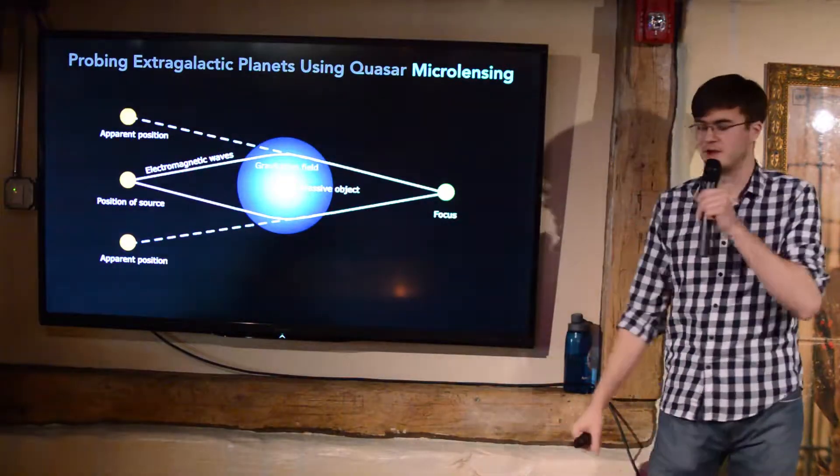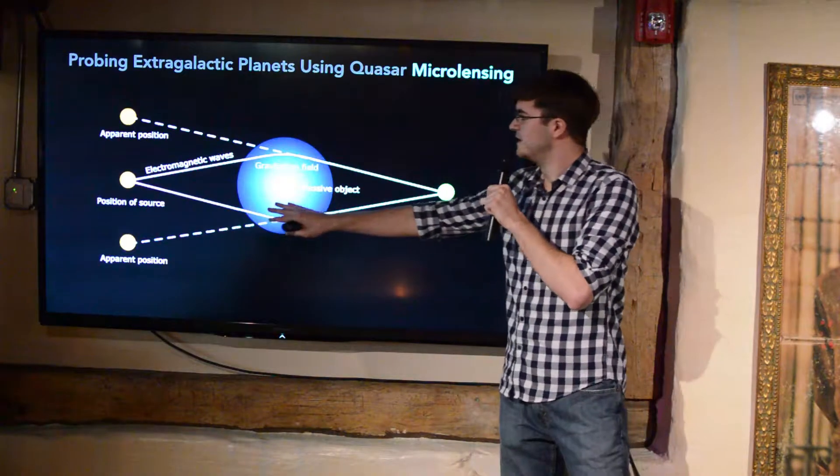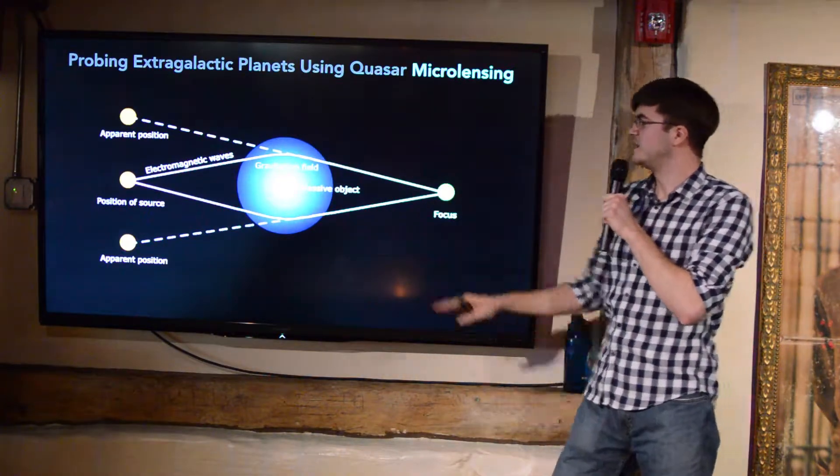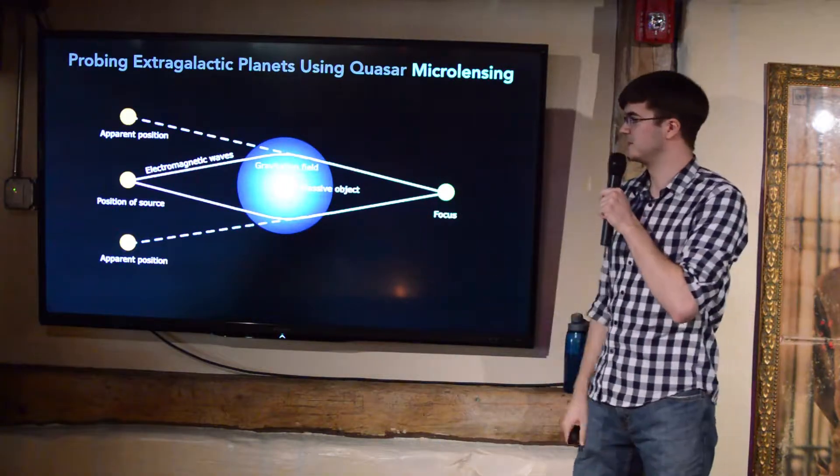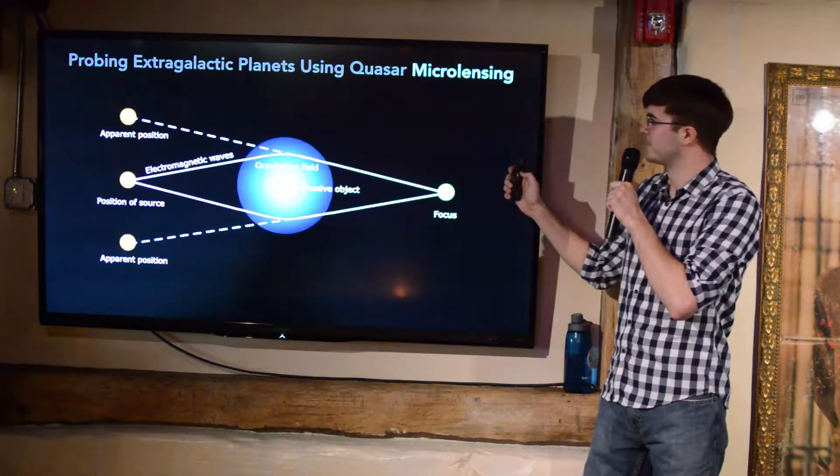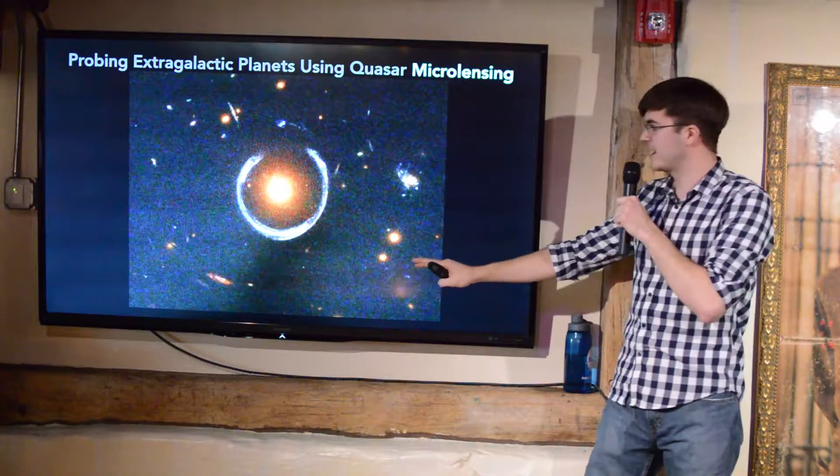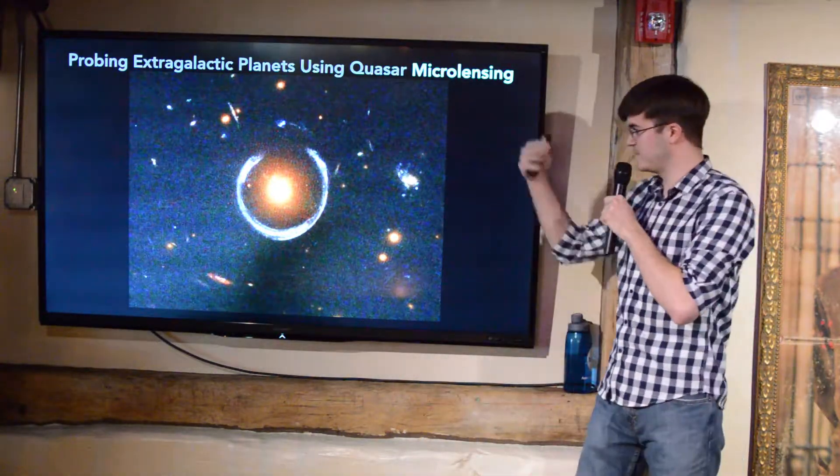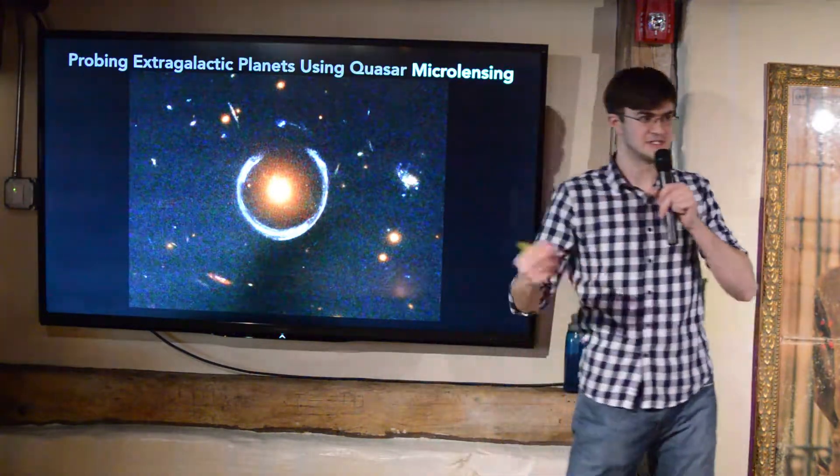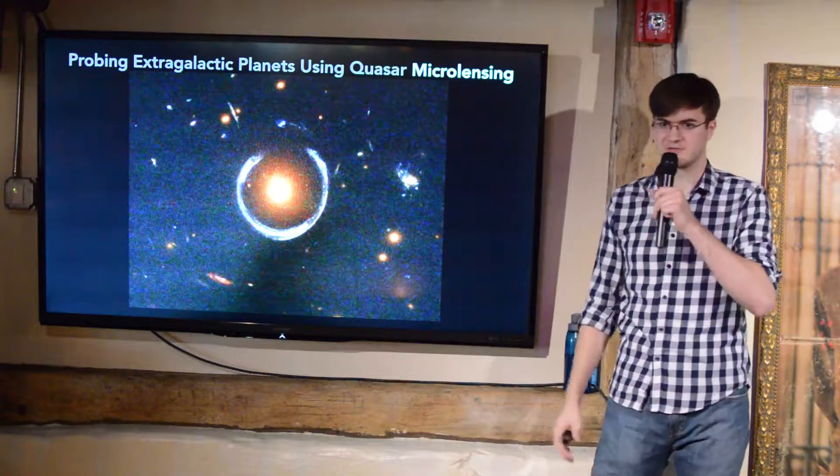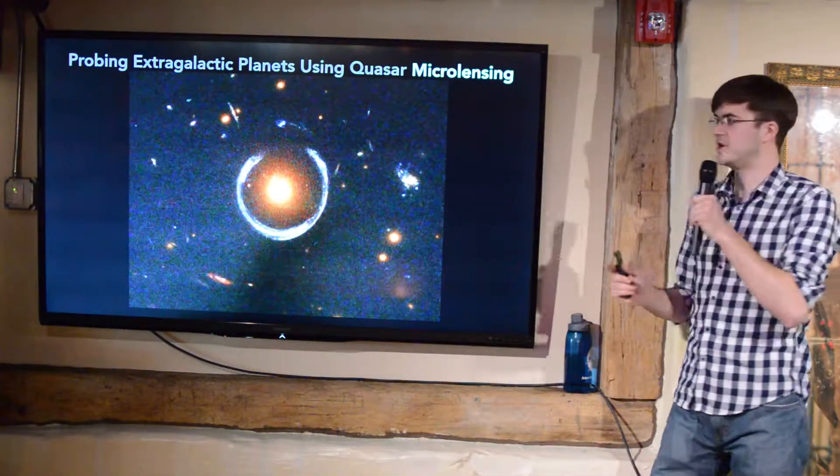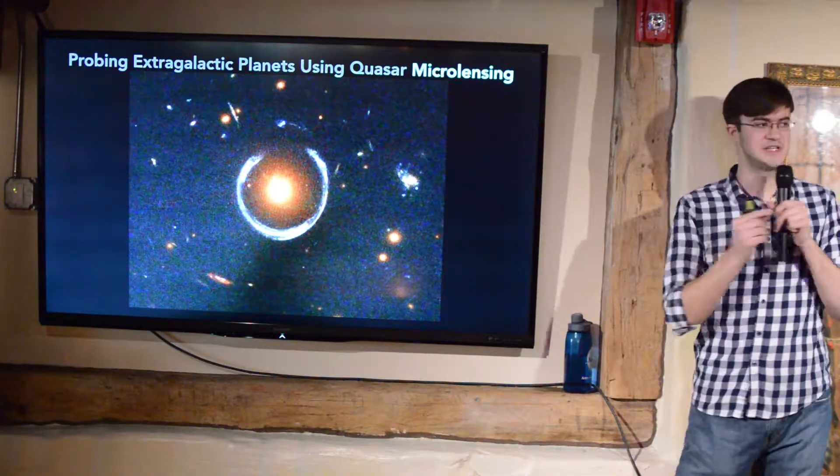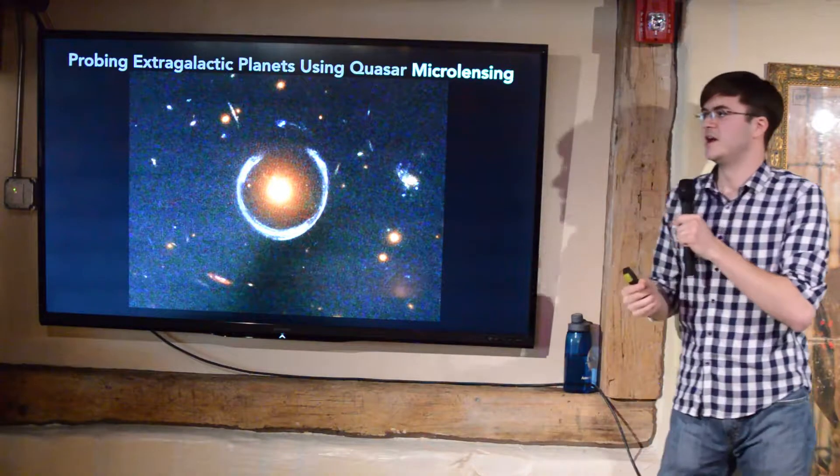Microlensing, we got a bit of this from Howard's talk. So basically, if you have a distant light source and the light passes near a massive object, it causes the light to deflect slightly and you get these apparent positions of your background light source. So here's just sort of an example of lensing between galaxies. We have some foreground galaxy in the yellow here and it's stretching out the light of a background galaxy sort of into this ring shape and it's called the Einstein ring because of Einstein's theory of general relativity.